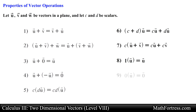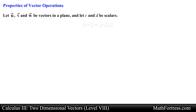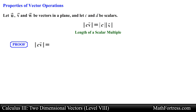Let's end the video by taking a look at one final vector property — a property involving the length or magnitude of a vector along with a scalar, known as the length of a scalar multiple. The magnitude of a scalar times a vector is equal to the absolute value of the scalar times the magnitude of the vector. We start by denoting vector v in component form, then apply the distributive property by distributing scalar c to each of the components.